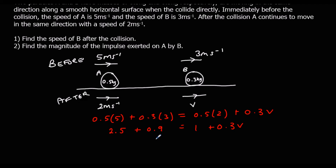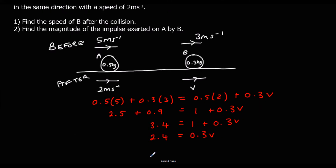Simplifying: 0.5 × 5 = 2.5, 0.3 × 3 = 0.9, and 0.5 × 2 = 1, so we get 3.4 equals 1 plus 0.3V. Subtracting 1 from both sides gives 2.4 equals 0.3V, and dividing both sides by 0.3 gives V equals 8 m/s.